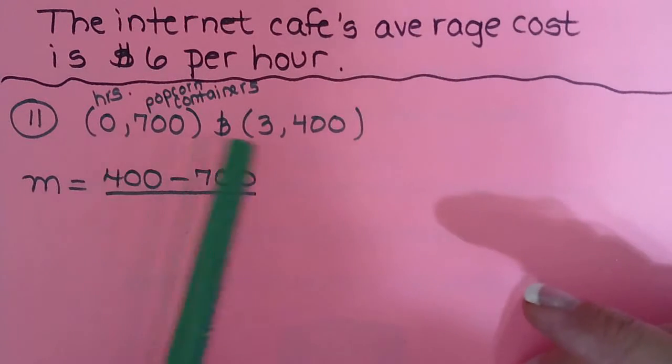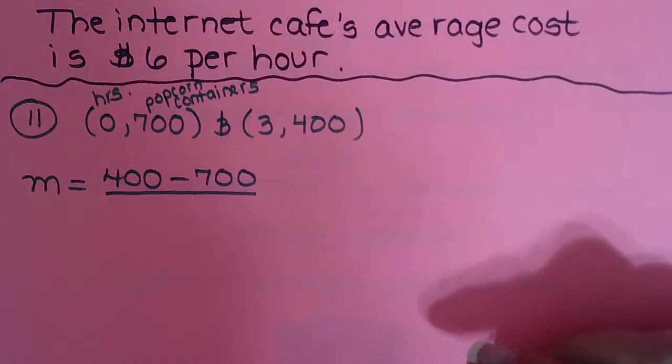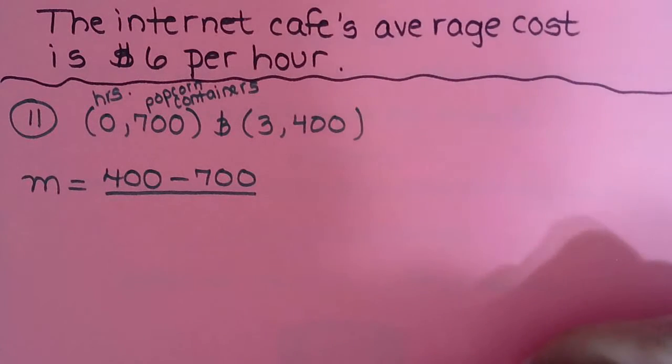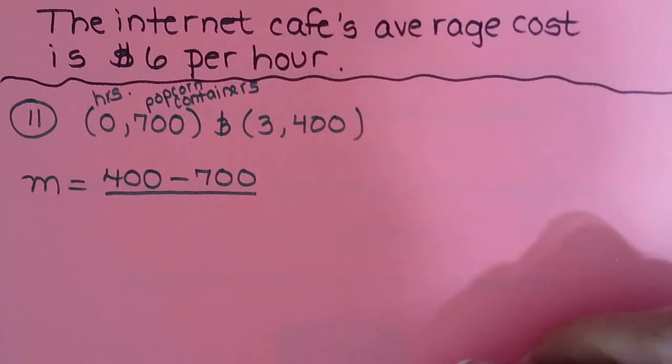And like I said, that could be 8 and 11. That could be 9 a.m., 12 p.m. You know, it could be any numbers as long as one's 3 bigger than the other. We started out with 700 popcorn containers. After 3 hours, we had 400.